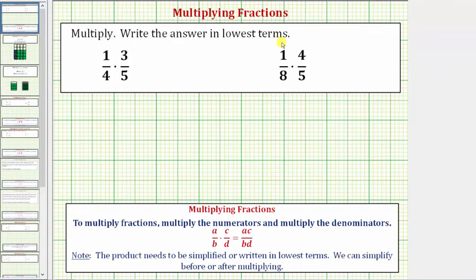We're asked to multiply and write the answer in lowest terms. To multiply fractions, we multiply the numerators and multiply the denominators.